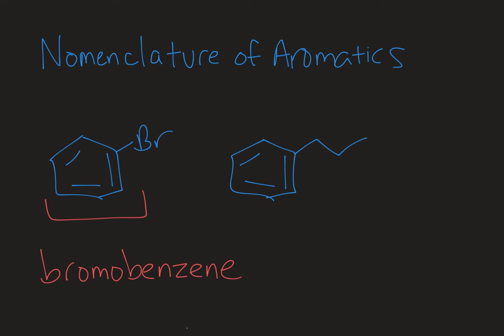And then if I go over to this molecule, the substituent has one, two, three carbons coming off of it. So that's a propyl group as a substituent. This molecule would be called propylbenzene.